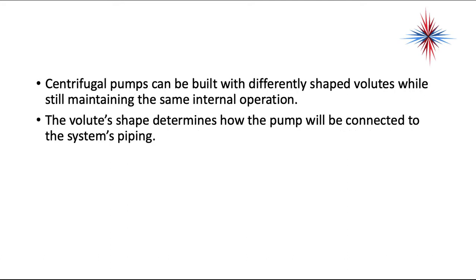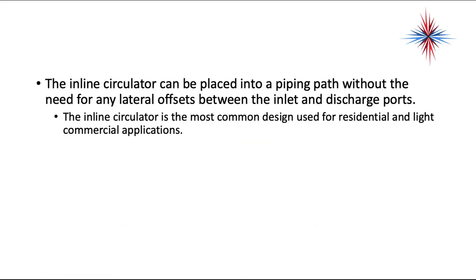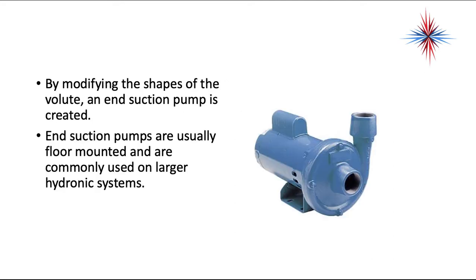Centrifugal pumps can be built with differently shaped volutes while still maintaining the internal operation. The volute shape determines how the pump connects to the system's piping. The inline circulator can be placed into a piping path without the need for lateral offsets between the inlet and discharge ports, and is the most common design used for residential and light commercial applications. By modifying the volute shape, an end suction pump is created, which is usually floor mounted and commonly used on larger hydronic systems.